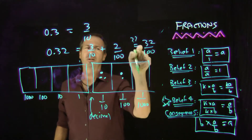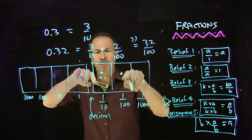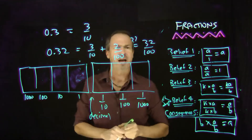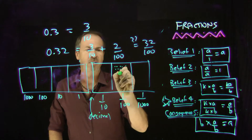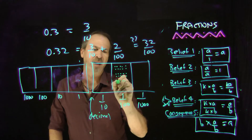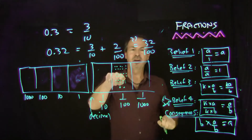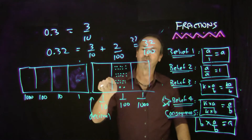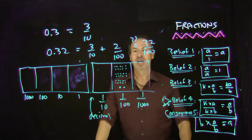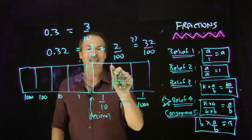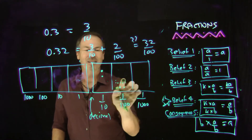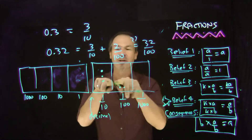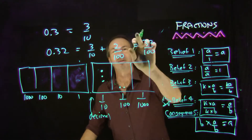Let me draw a picture of 3 tenths and 2 hundredths, and now a picture of 32 one-hundredths — that's 32 dots in the hundredths box. 32 hundredths looks different from 3 tenths and 2 one-hundredths. Except we know 10 of these — kaboom — is the same as one of those, so we can explode groups of 10 across the boxes. It turns out 32 hundredths actually equals 3 tenths and 2 one-hundredths. Yes, that equals is valid.